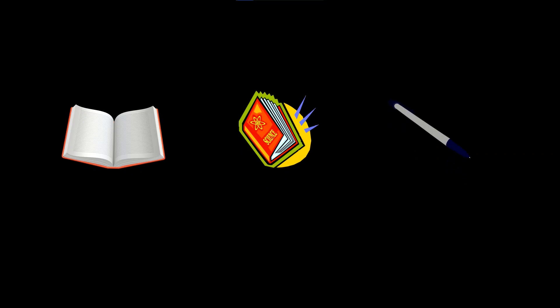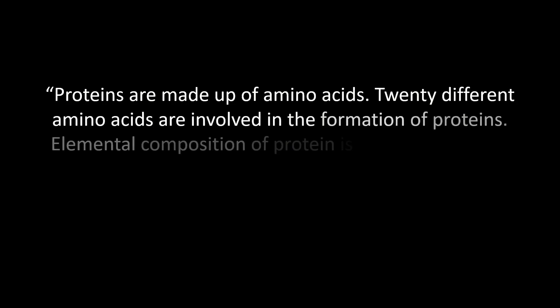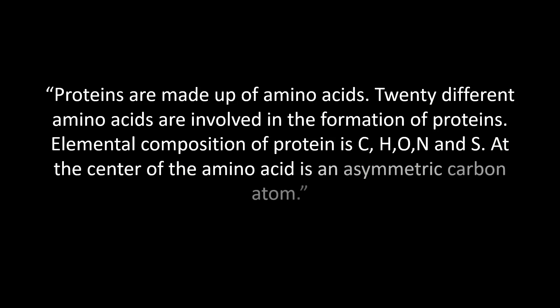Turn to your first lesson. Now let's take this paragraph for an example. It's about proteins. Let's read it. Proteins are made up of amino acids. 20 different amino acids are involved in formation of proteins. Elemental composition of protein is carbon, hydrogen, oxygen, nitrogen and sulfur. At the center of the amino acid is an asymmetrical carbon atom.